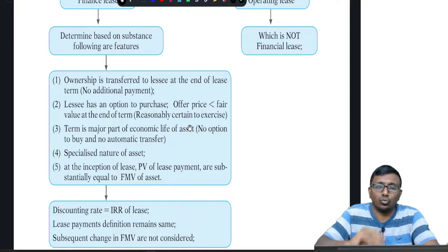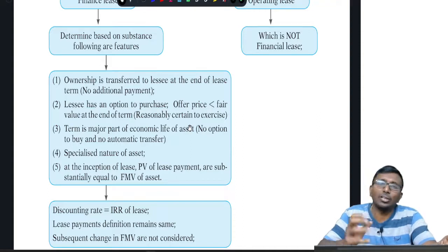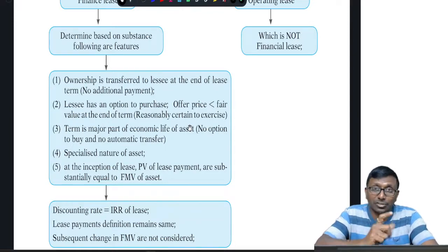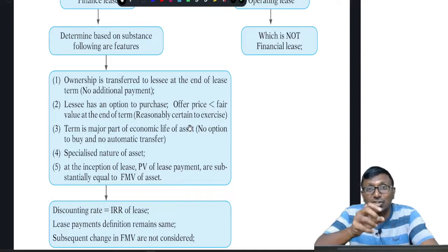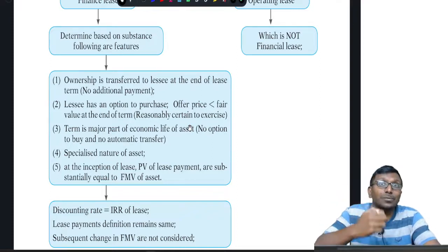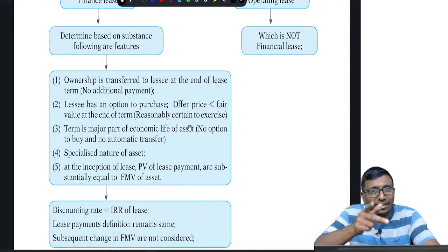Feature four: specialized nature of asset. If it is a specialized asset, the lessor would have already collected the total amount along with the return he wants. Feature five: on the date of inception, the present value of the minimum lease payments is substantially equal to the fair market value of the asset. This assessment happens on the date of inception — that is, the lease agreement date or the date on which important terms are agreed by both parties, whichever is earlier — not the date of commencement.